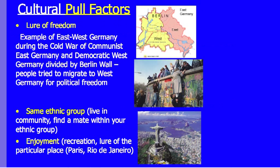Cultural pull factors lure people to another place. A political pull factor example was during the Cold War when Berlin was split into east (communist) and west (democratic) halves. People from eastern Berlin were lured by freedom in the west. Other cultural pull factors include moving to be near your ethnic community, finding a mate, or living somewhere with beautiful sites, recreational activities, museums, or monuments.